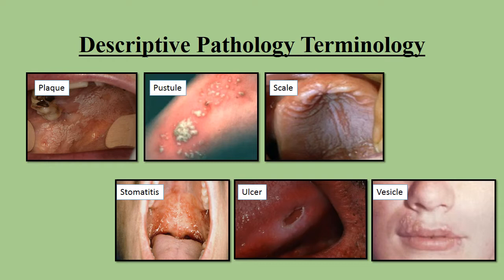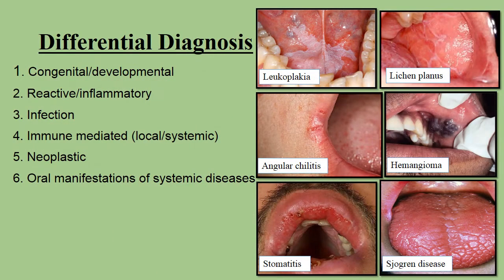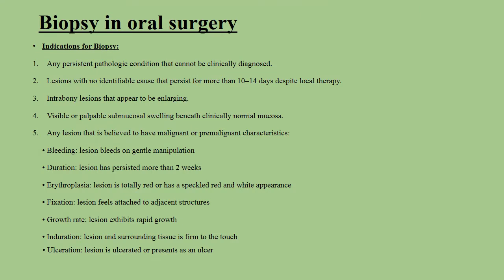And finally, a vesicle is a small blister — small, circumscribed, elevated, containing serous fluid. Biopsy means removal of tissue from a living body for microscopical diagnostic examination. It is considered the most precise and accurate of all diagnostic tissue procedures.